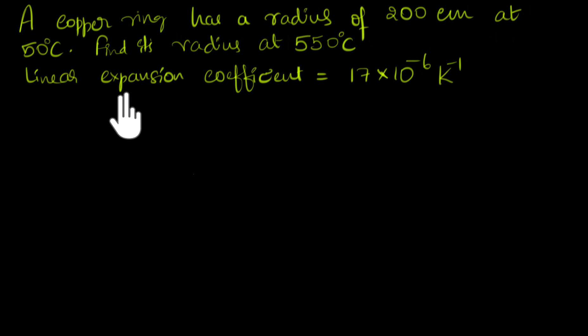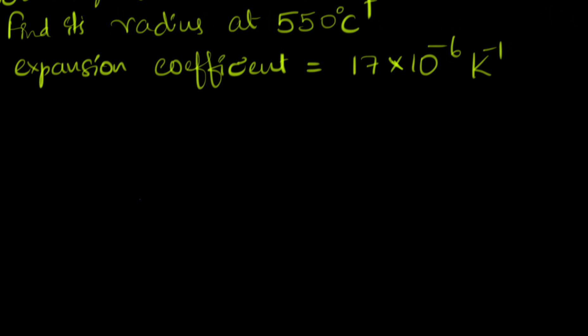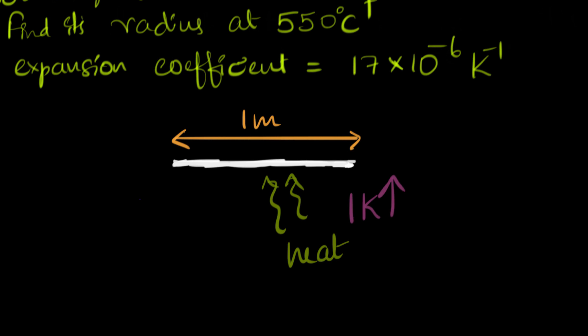Now this number called the linear expansion coefficient is just a number that tells us how much something expands on heating. This number is telling us how much copper expands on heating. Here's the way to think about this. Imagine you had exactly one meter long copper wire. Assume this is copper. If you heat it up and increase its temperature by exactly one Kelvin, then the whole thing would expand by that number. That's what this number really is.